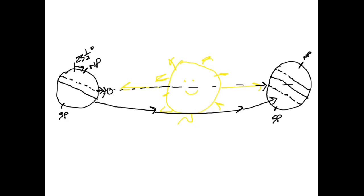Our person on the Tropic of Cancer notices that during the summer solstice the sun is directly overhead, but half a year later at the winter solstice the sun is at an angle. What we observe is a seasonal shift in where the most direct sunlight falls — relative to an observer on Earth, the position of the sun has seemed to change.